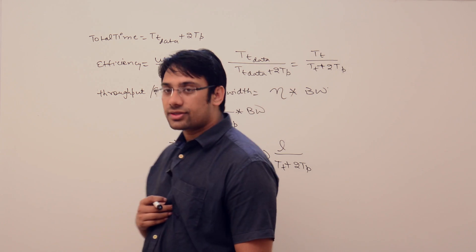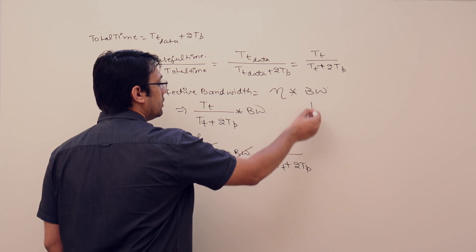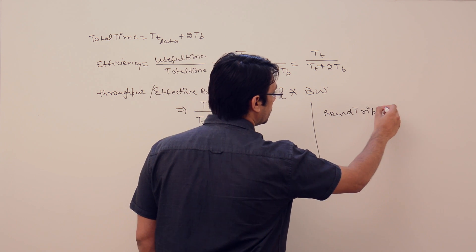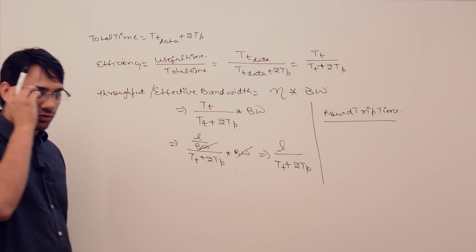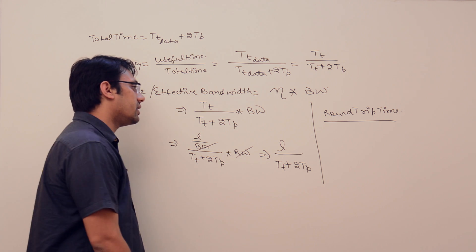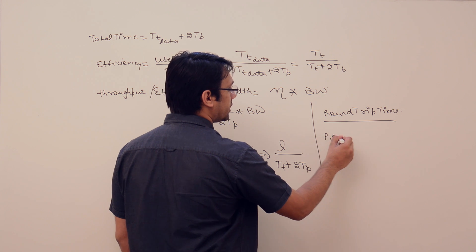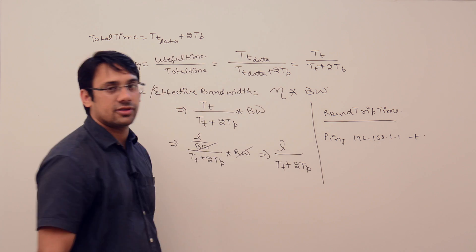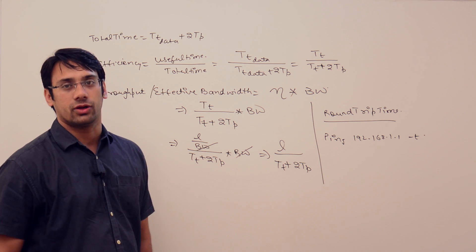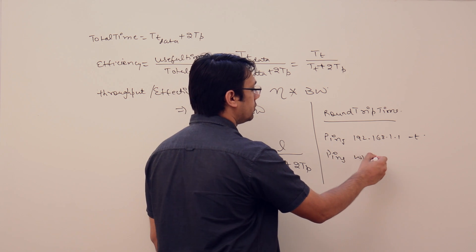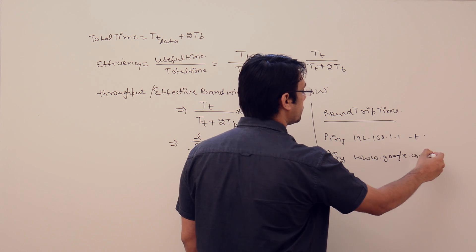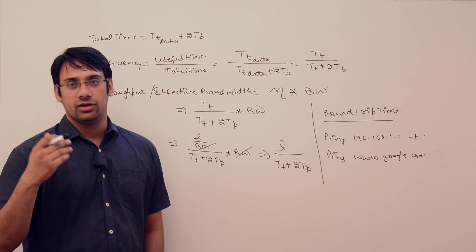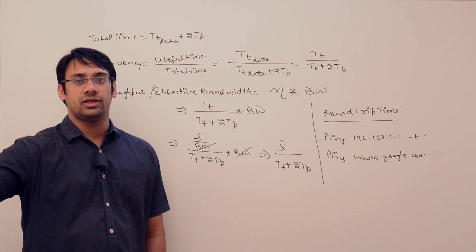The next important terminology is the ping command, or round trip time. Round trip time is the time taken for one packet to travel from the sender to the receiver and back. For example, in Windows we do: ping 192.168.1.1 -t, which measures the round trip time between your host and a particular router. You can also do ping www.google.com to measure the time taken by one packet to travel from your system to the Google server and back.